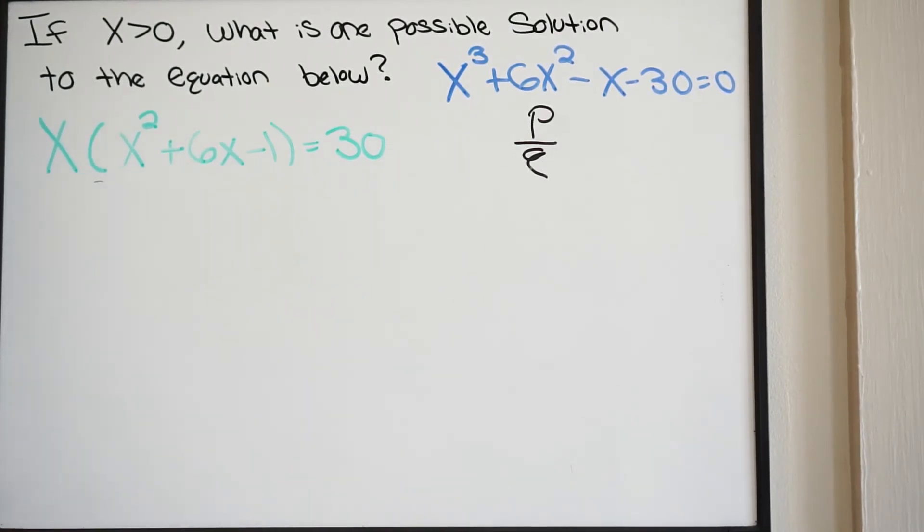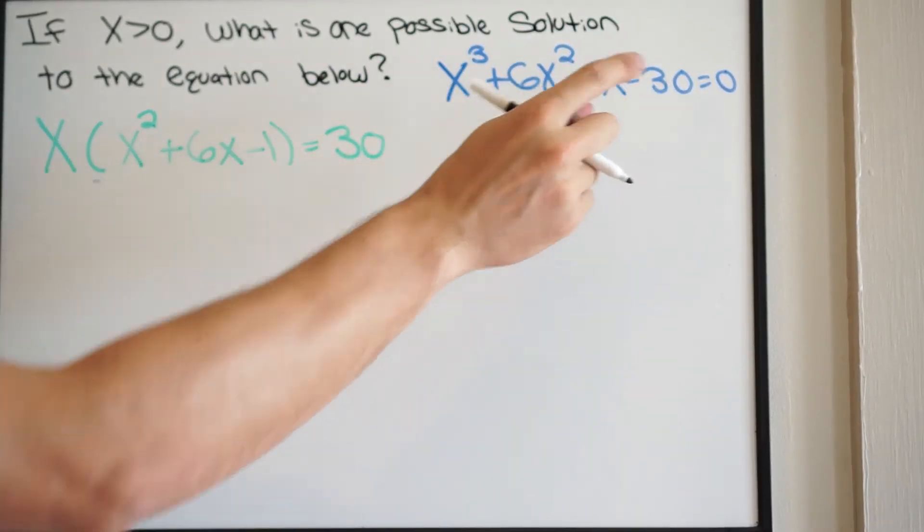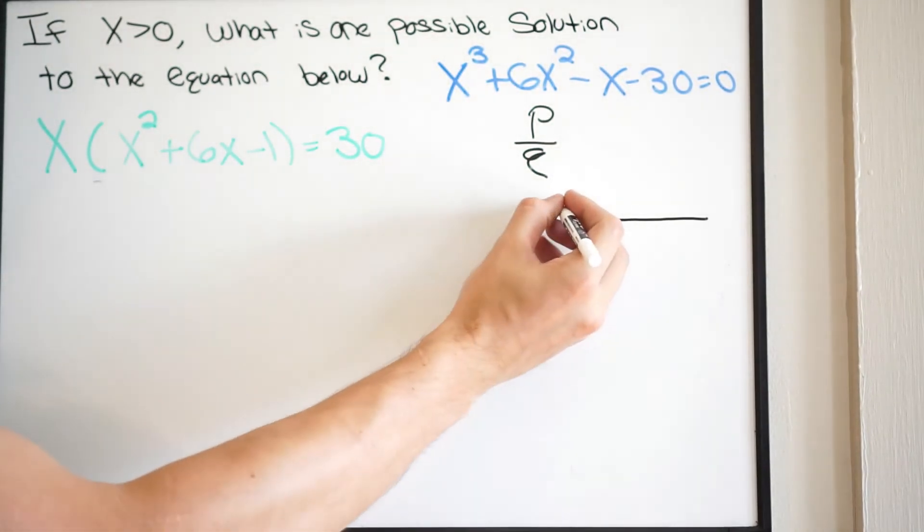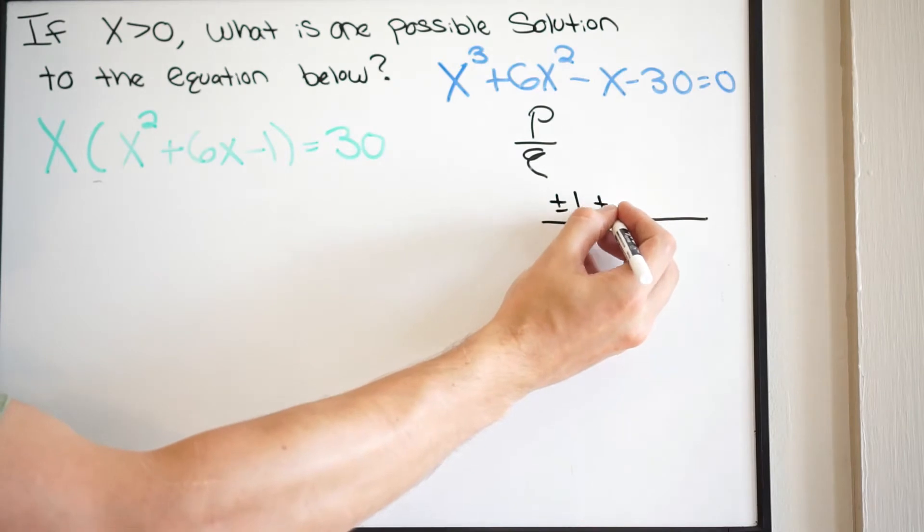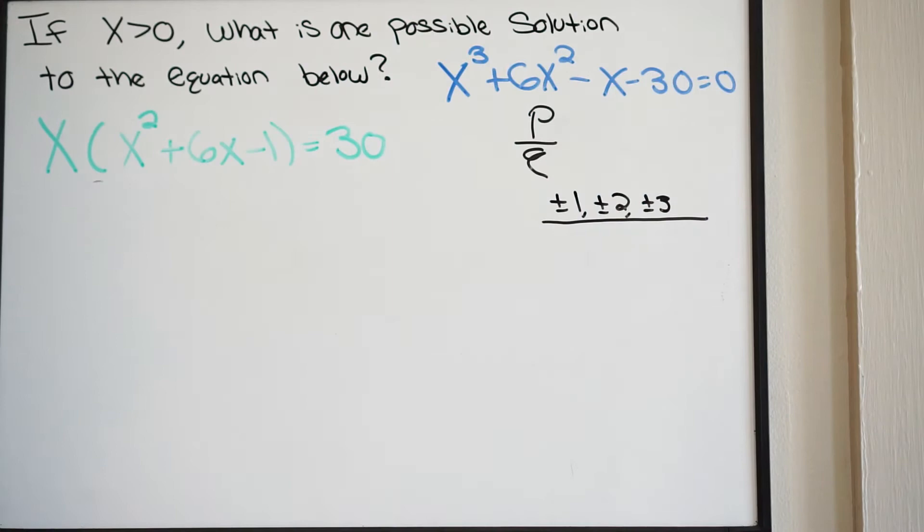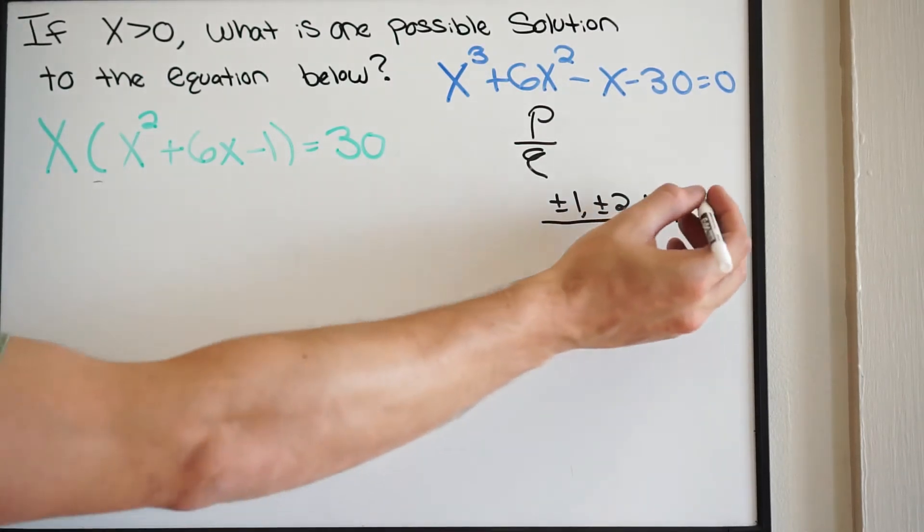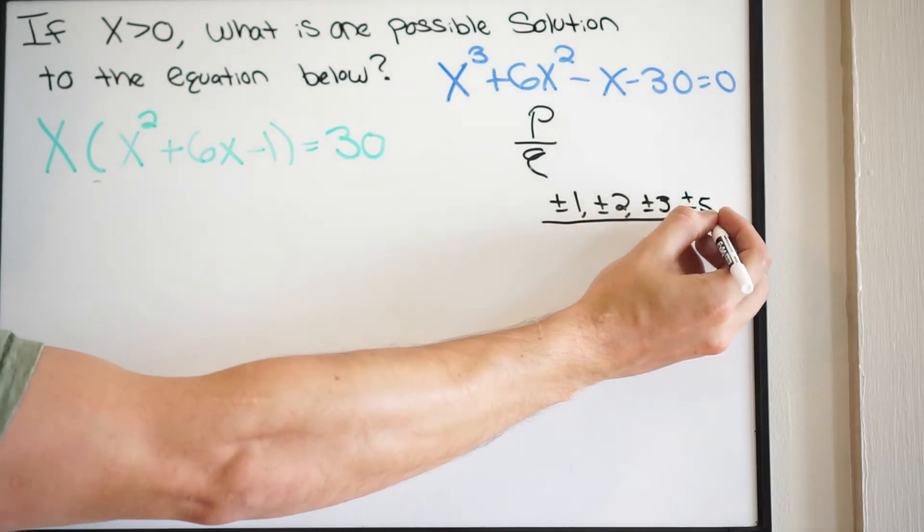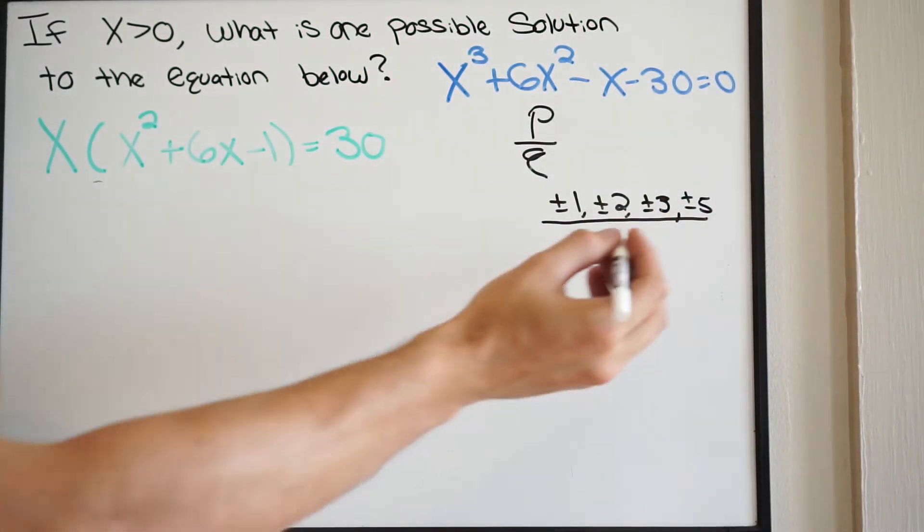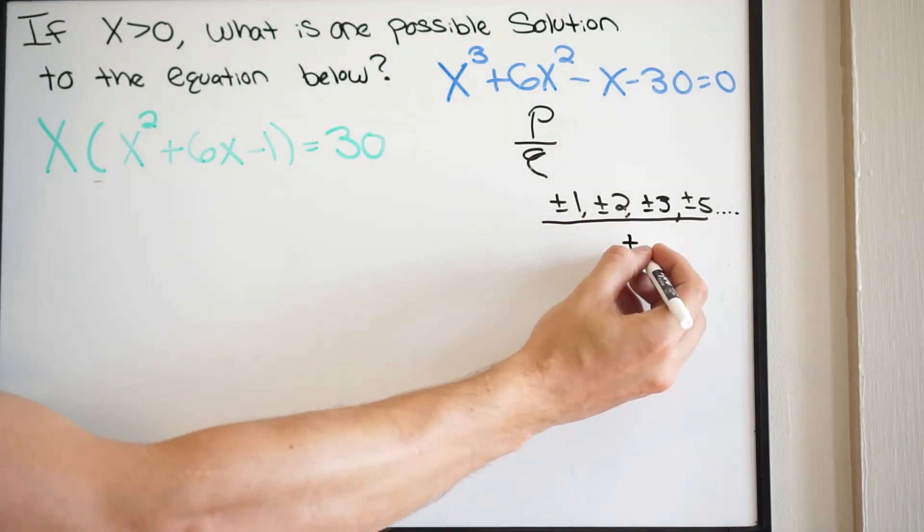Let's go ahead and write out some factors for our constant here. Looking at negative 30, we can have plus or minus 1, plus or minus 2, plus or minus 3. You don't have to write them all out, but you want to write out a good amount that way you can test some possible rational roots. Plus or minus 5. We'll stop there for now. And then looking at our leading coefficient, that's just going to be 1, so it's plus or minus 1.